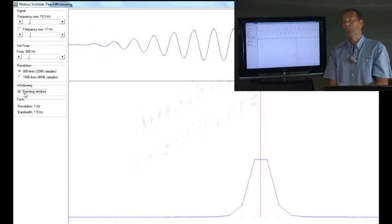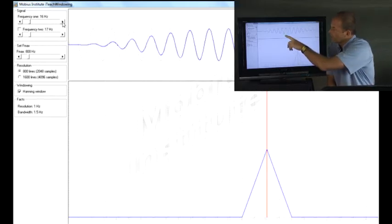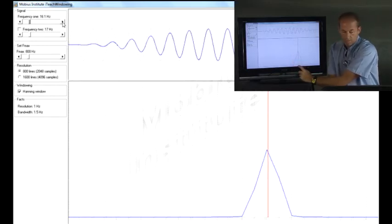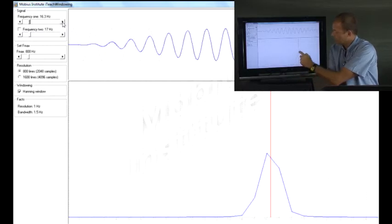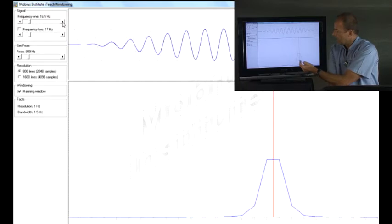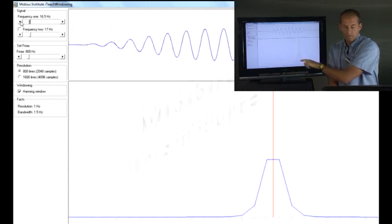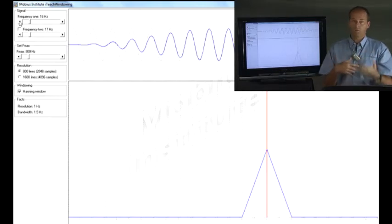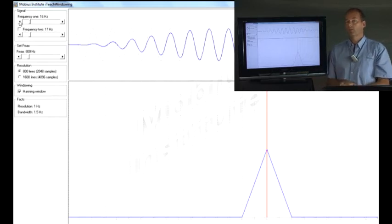I'm going to turn on the Hanning window, which improves the situation. We're not here to talk about windowing right now. It improves the situation, but watch what happens. As I change the frequency, right now I've got exactly 16 hertz, so it's nice and sharp. It's broader now, but it's 16 hertz. But as I change, notice the way the shape of this peak changes. And if it's 16.5 hertz, which happens to be right in the center, notice that the amplitude is much lower than it was back here. It's 15 percent lower. That's just a fact of life. That is just the way the spectrum process works when you do windowing and so on. The only way to improve it is to have much higher resolution, but you're still going to have it to some extent.